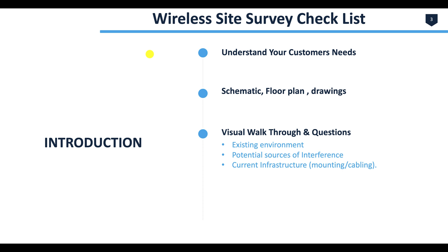Here's the wireless site survey checklist — it's pretty straightforward. First, you need to understand your customer's needs. Why do you need the wireless site survey? Because we're selling a warehouse management system, an ERP, an SAP solution with a WMS or MMS module. You also need to ask: do you need it for voice? A lot of customers don't know until you ask. They might need multiple SSIDs because the IT manager might need it for voice, data, streaming, video, intercom, VoIP, or wireless VoIP.